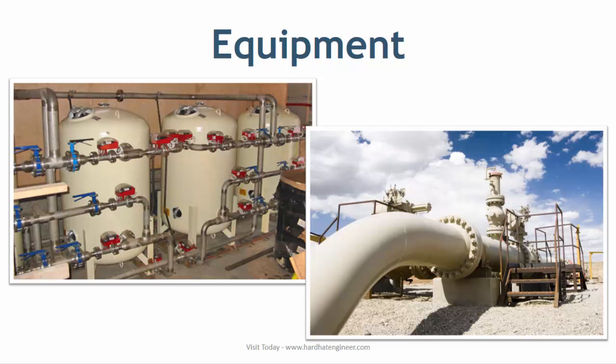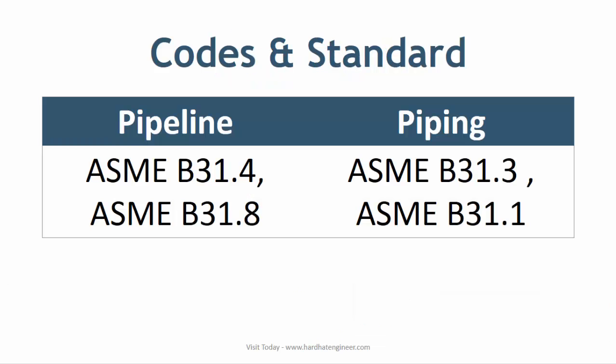The last difference between piping and pipeline: in the oil and gas industry, a pipeline is designed in accordance with ASME B31.4, i.e., the code for liquid transportation systems for hydrocarbons, liquid petroleum gases, anhydrous ammonia and alcohol, and ASME B31.8, i.e., the code for gas transmission and distribution piping systems. Whereas piping is designed in accordance with ASME B31.3, i.e., the process piping code, and for power plant piping, ASME B31.1, i.e., the code for power piping.